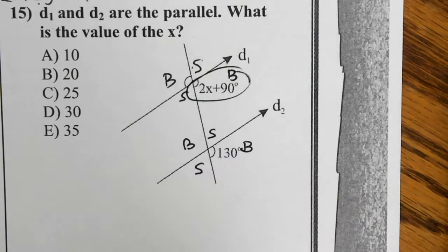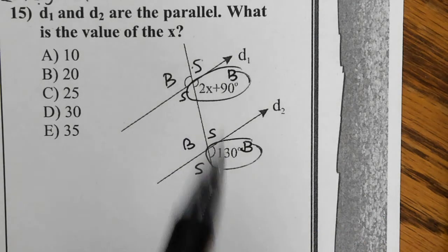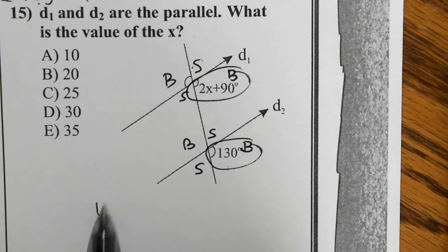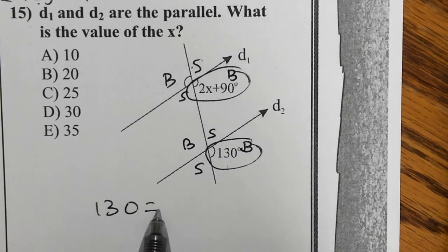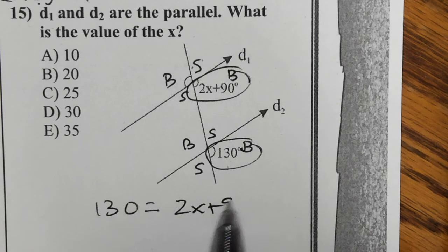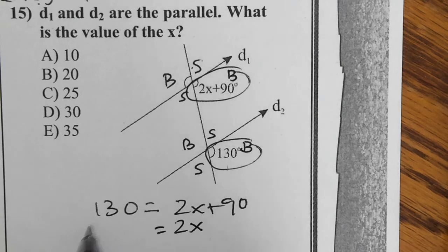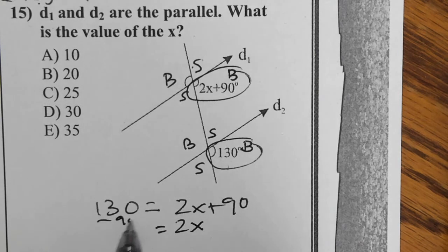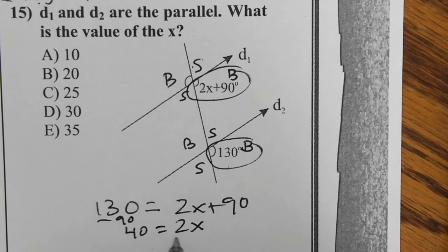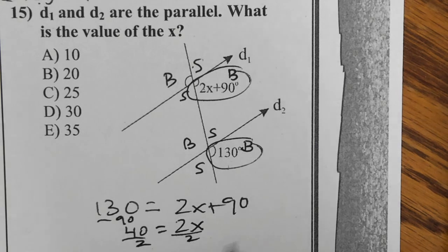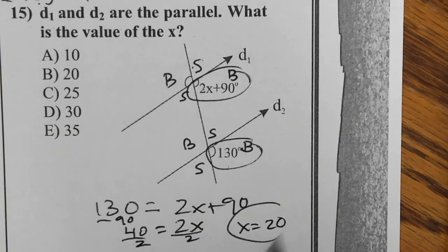I'm given one big angle and a second big angle. Bigs are equivalent, so 130 equals 2x plus 90. Using simple algebra, I can solve. I'm going to start by moving 90 to the opposite side by subtracting it. 130 subtract 90 is 40. Now dividing both sides by 2, I end up with x equals 20.